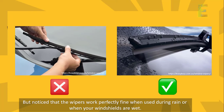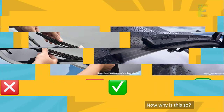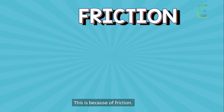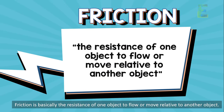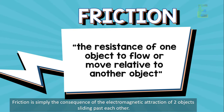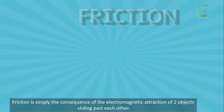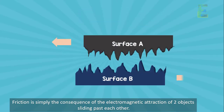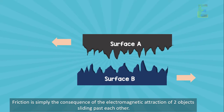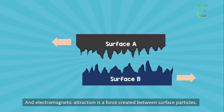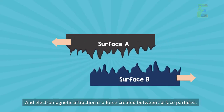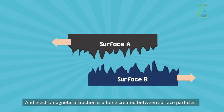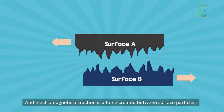Now why is this so? This is because of friction. Friction is basically the resistance of one object to flow or move relative to another object. Friction is simply the consequence of the electromagnetic attraction of two objects sliding past each other. An electromagnetic attraction is a force created between surface particles.